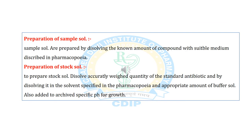Now we come to preparation of sample solution. Sample solutions are prepared by dissolving a known amount of compound in a suitable medium as described in the pharmacopoeia. For preparation of the stock solution, dissolve an accurately weighed quantity of the standard antibiotic in the solvent specified in the pharmacopoeia, and add an appropriate amount of buffer solution to achieve the specific pH required for growth.